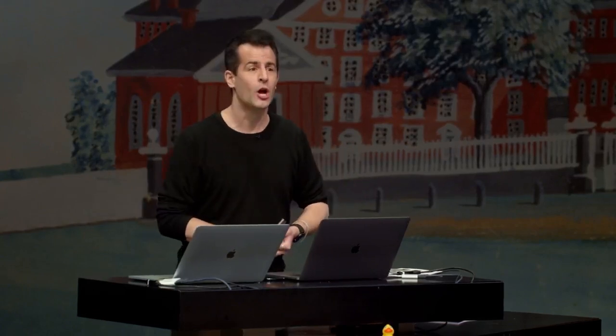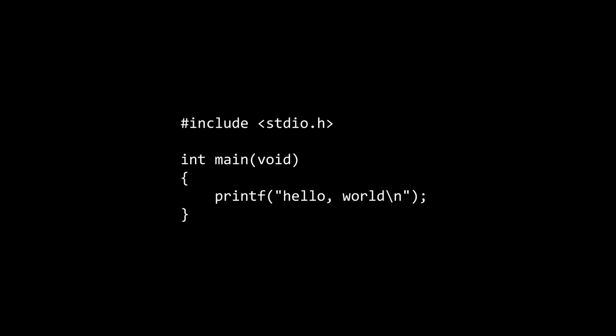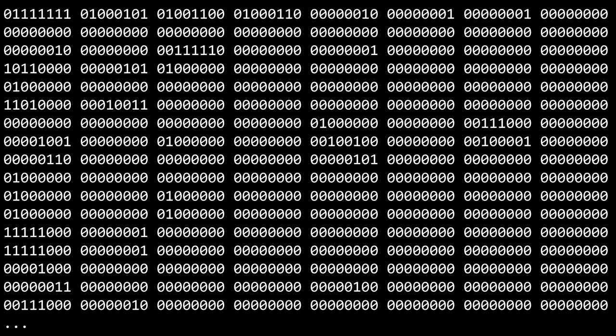Last week, we began with perhaps the most canonical of programs in C — the most canonical program you can write in pretty much any language — which says, quite simply, hello world. But recall that before actually running this program, we have to convert it into the language that computers themselves speak, which we defined last week as binary, zeros and ones, otherwise known as machine language. So we have to go somehow from this source code to something more like machine code — the zeros and ones that the computer actually understands.